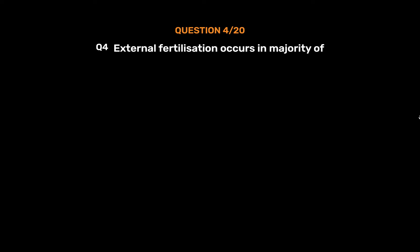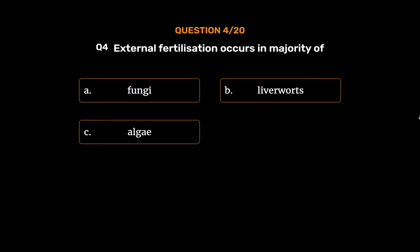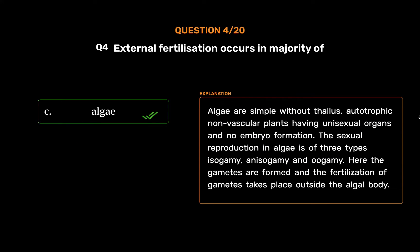Question No. 4: External fertilization occurs in the majority of. Option A: Fungi. Option B: Liverworts. Option C: Algae. Option D: Mosses. The correct answer is Option C: Algae. Algae are simple thallus-forming, autotrophic non-vascular plants having unisexual organs and no embryo formation. The sexual reproduction in algae is of three types: isogamy, anisogamy and oogamy. Here the gametes are formed and fertilization takes place outside the algal body.